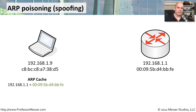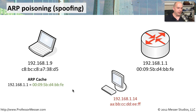The problem happens when a bad guy gets onto the subnet. That's an important consideration with ARP poisoning or ARP spoofing — you have to be on the local subnet. Someone can't perform this ARP spoof from a different subnet or anywhere on the internet. The bad guy has to be on that same subnet. Here he is at 192.168.1.14, and you can see the MAC address of his workstation.